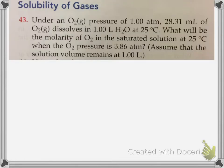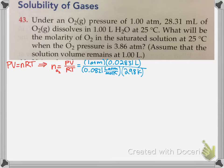Under oxygen gas pressure 1 atm, 28.3 milliliters of oxygen gas dissolves in 1 liter of water at 25 degrees Celsius. What is the molarity of oxygen in the saturated solution at 25 degrees Celsius when oxygen gas pressure is 3.86 atm? Assume the volume remains constant at 1 liter. First use the ideal gas law, since we are dealing with oxygen gas. We're looking for number of moles first because we're dealing with molarity, moles of solute over liter solution.